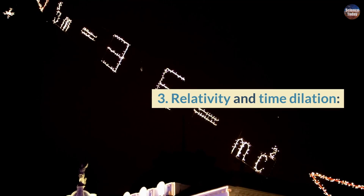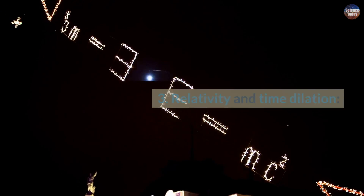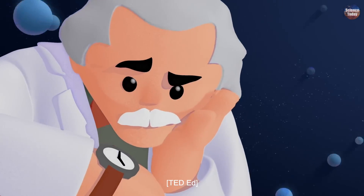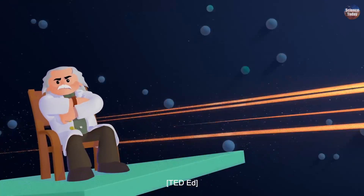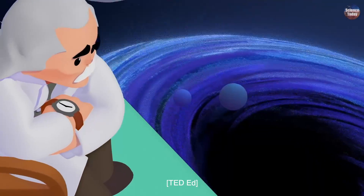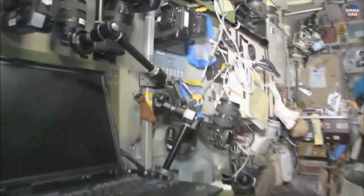Third: Relativity and time dilation. Thanks to our buddy Einstein, we know that time isn't absolute — it's relative to an observer's frame of reference. This means time can slow down or speed up based on factors like velocity and gravity. It's crazy to think that astronauts aboard the International Space Station experience time slightly differently than we do here on Earth.